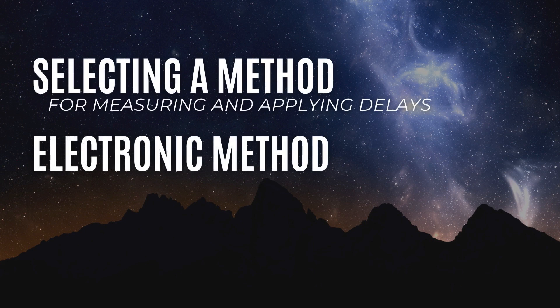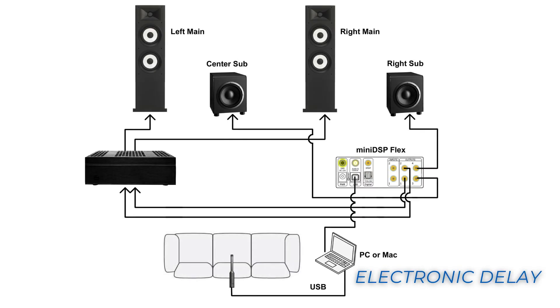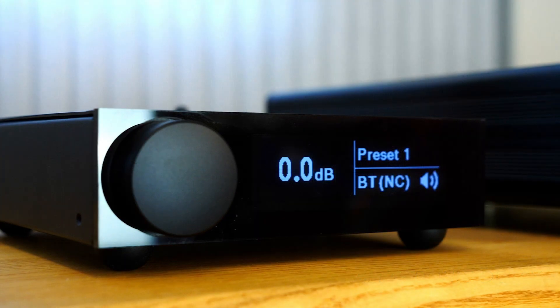The second approach uses Room EQ Wizard, or REW, to calculate the delays electronically. This is the most accurate method for ensuring the acoustic wavefronts of all speakers are coincident with the listening area. An advantage of using an acoustic timing reference signal to electronically measure delays is that it accounts for the effects of many variables, including systems with various types of subwoofers and full-range speakers, inline digital signal processing, and any wireless interfaces.